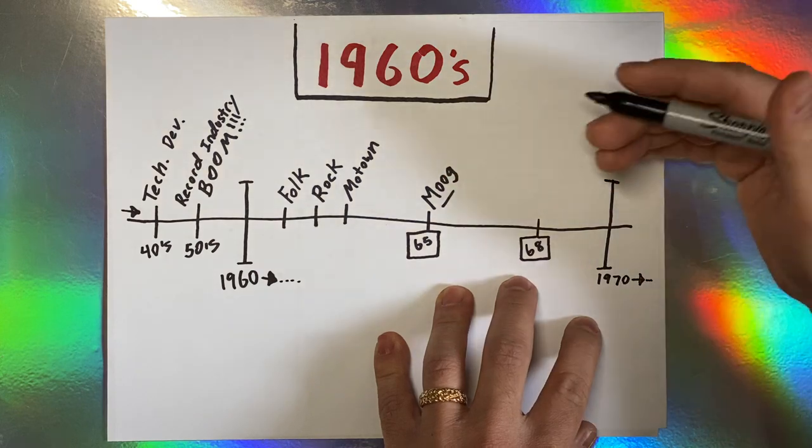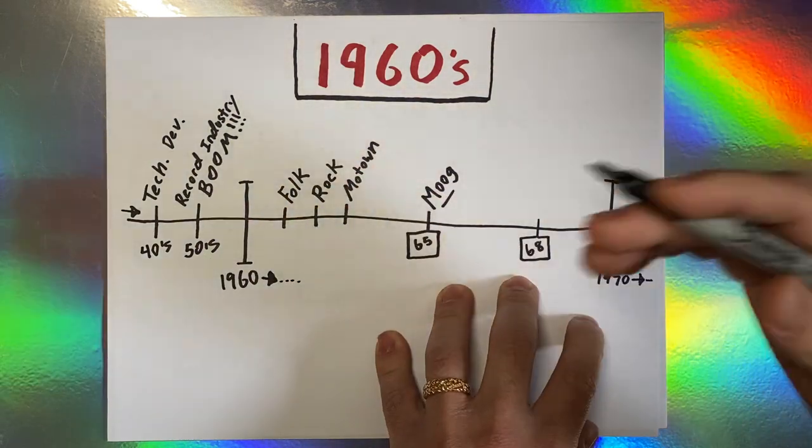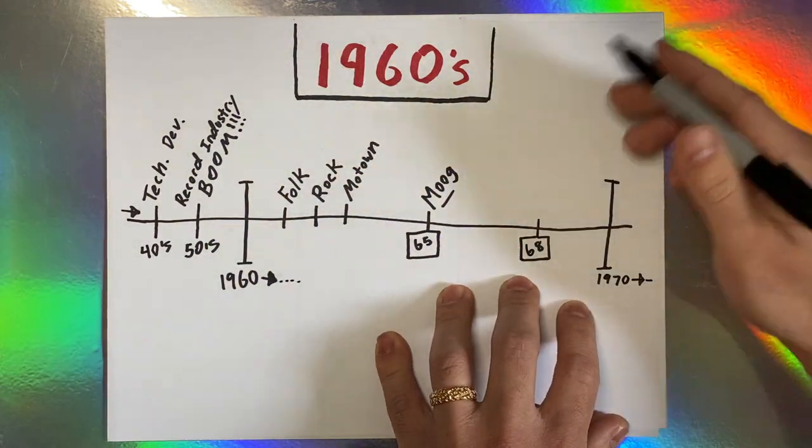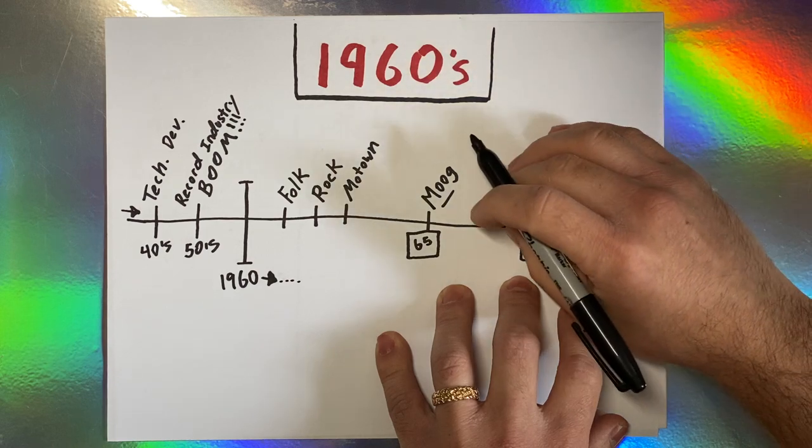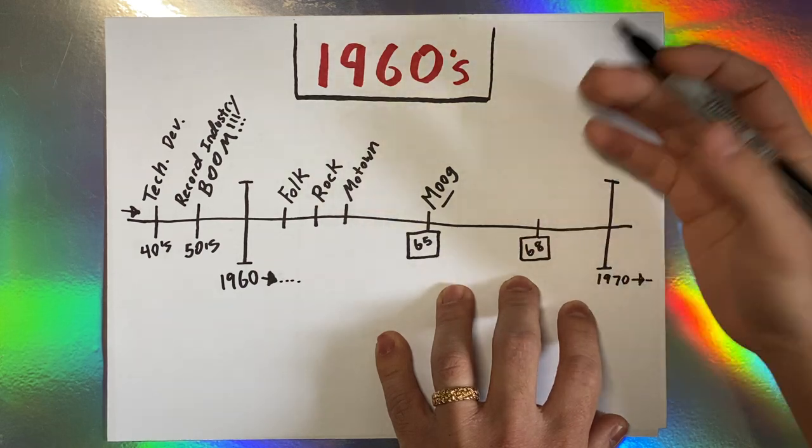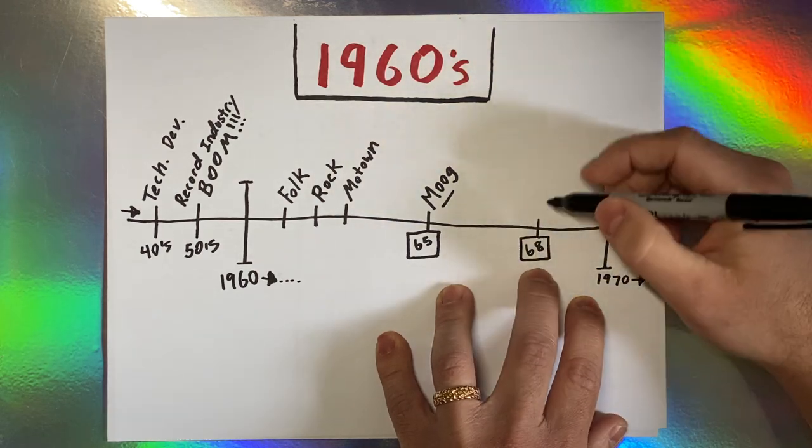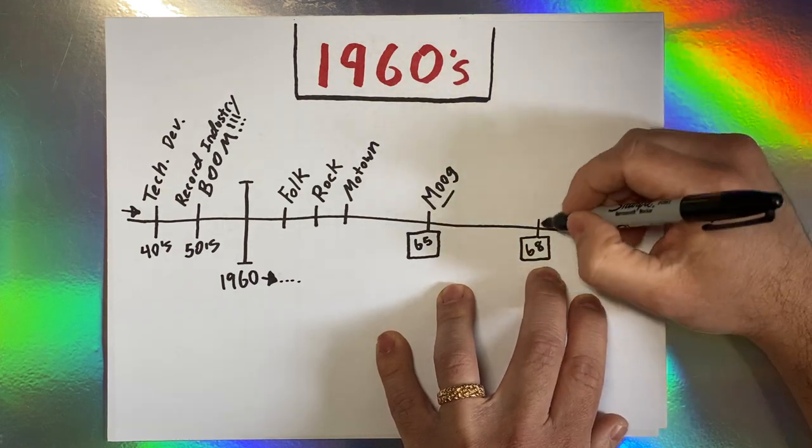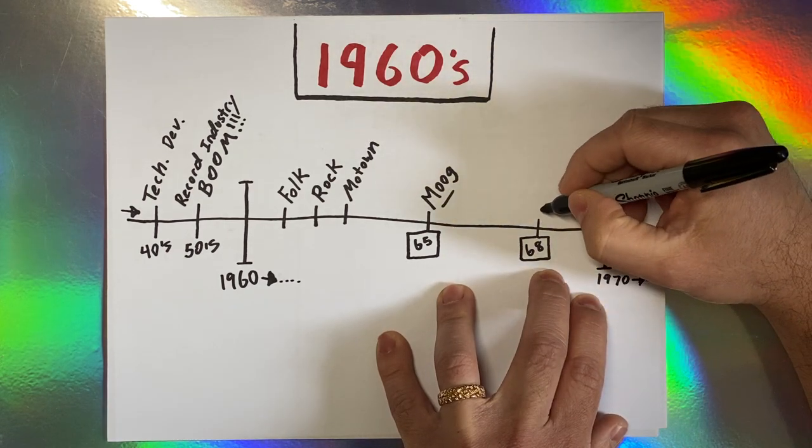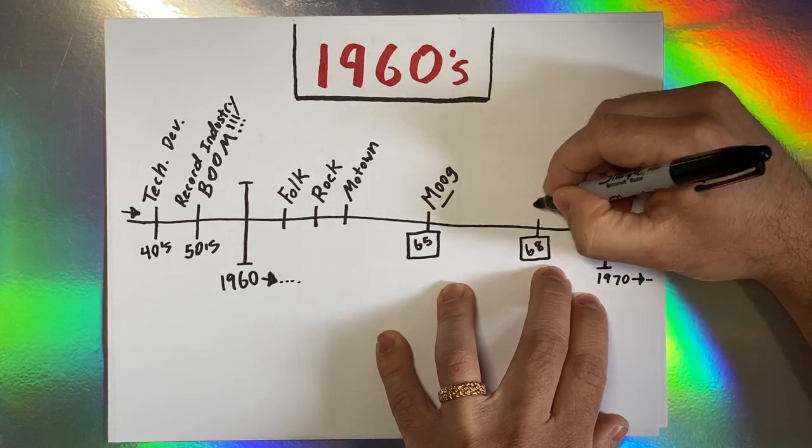That record is still to this day one of the most popular electronic records from history. You'll find it in thrift stores and all sorts of record shops all the time. It's a household name. All of a sudden, synthesizers could make this kind of music, and so we'll just say electronic record.